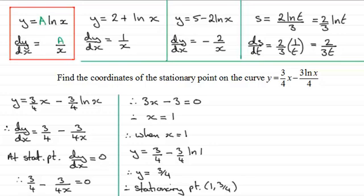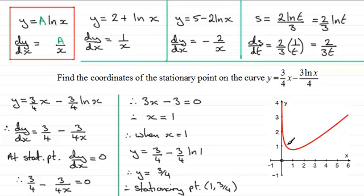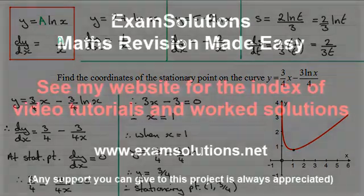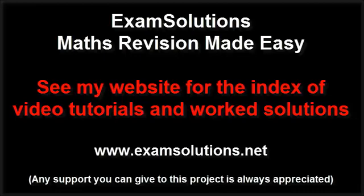Here is the graph of y equals three quarters x minus 3 natural log of x over 4, and you can see that stationary point at the point 1 and three quarters up. I hope that's given you an idea of how we can differentiate y equals a constant times the natural log of x — dy/dx equals that constant over x.